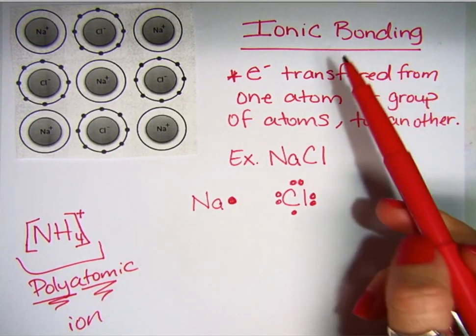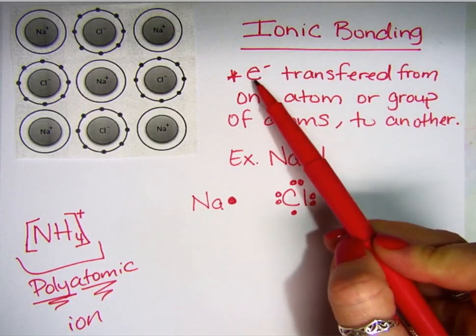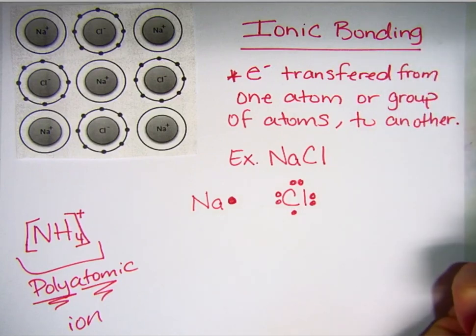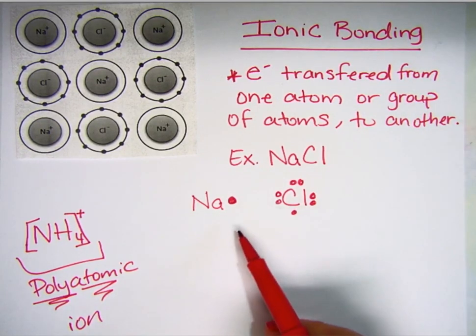Again, in ionic bonding, electrons get transferred from one atom or group of atoms to another. So we're going to start off with a simple example.